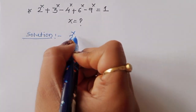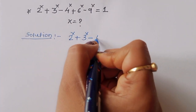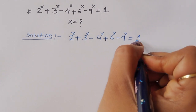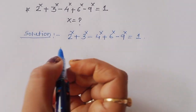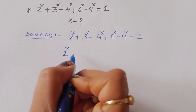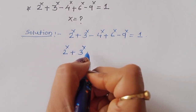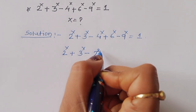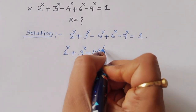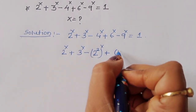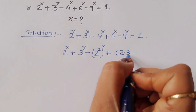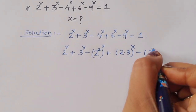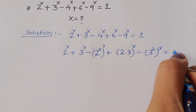The given equation is 2^x + 3^x - 4^x + 6^x - 9^x = 1. Now we can rewrite: 4^x as (2²)^x, and 6^x as (2·3)^x, and 9^x as (3²)^x. So we can write 3^(2x) is equal to 1.